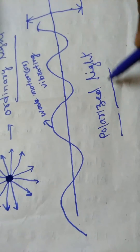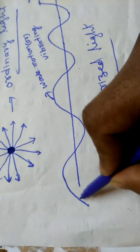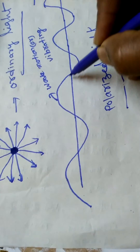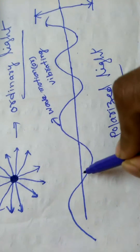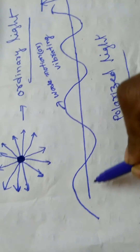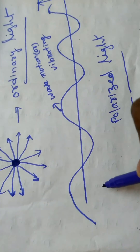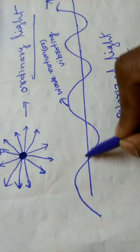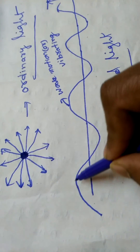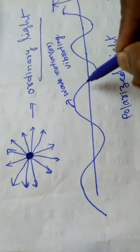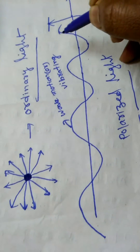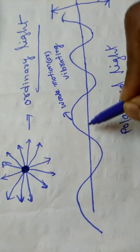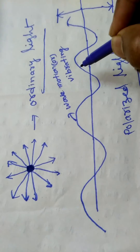In the case of polarized light, this is the wave of light — it is moving up and down and confined to a single plane only. The wave motion is confined to a single plane only, so it is called polarized light. It vibrates in one direction only.